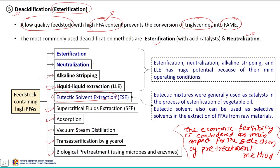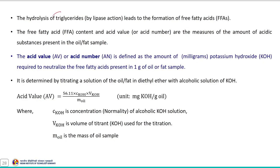The economic feasibility is the main aspect considered for the selection of the pre-treatment method. Esterification, neutralization, alkaline stripping and liquid-liquid extraction have huge potential because of their mild operating conditions, whereas eutectic mixtures were generally used as a catalyst in esterification of vegetable oil and can also be used as a selective solvent in extraction of FFAs from raw material. The hydrolysis of triglycerides by the action of lipase enzyme leads to the formation of free fatty acids, and the FFA content — also termed as the acid value — is the measure of the number of acidic substances present in the oil or fat sample.